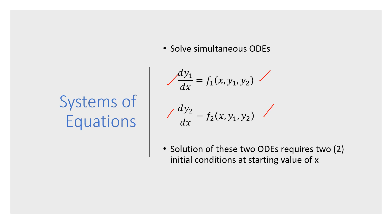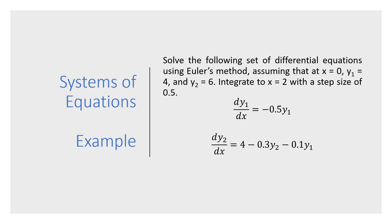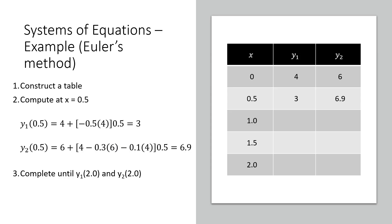We take this as an example because it's easier to understand. Solve the following set of equations using Euler, assuming at x=0, y1=4 and at x=0, y2=6. These are the two initial conditions. You need to integrate from x=0 to x=2; the step size is given. The first equation and the second equation are provided.